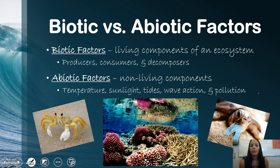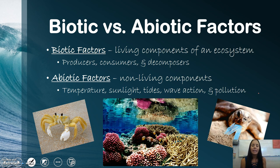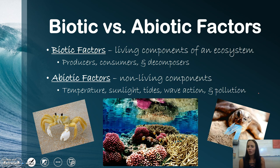Let's take a closer look at abiotic and biotic factors. Biotic — the prefix 'bio' means living — so these are the living components of an ecosystem: your producers, consumers, and decomposers. Abiotic — 'a' meaning without — are the non-living components: temperature, sunlight. In the ocean we also have tides, wave action, and sadly pollution.